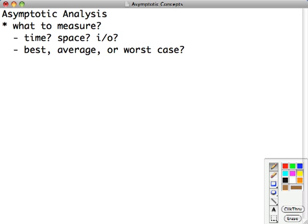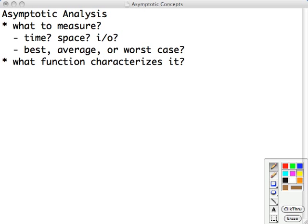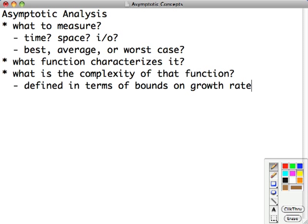First, what do we want to measure about our algorithm? Do we want to measure time, space, communication done through I/O? Do we care about the best case, the average case, or the worst case? Next, we need to identify a function that characterizes the thing we want to measure, a mathematical function. And that is much of the work of analysis. And then we need to classify that function in terms of its complexity, a major concept of this course. Complexity is defined in terms of bounds on growth rate.